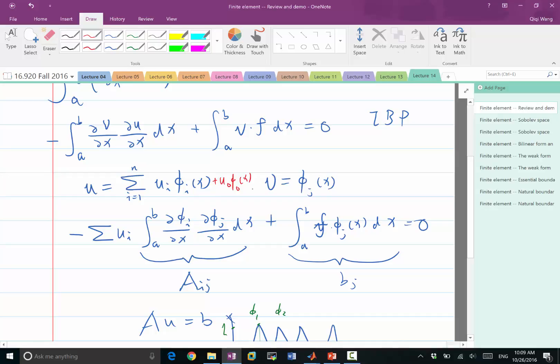So what happens is that because the test function, because the phi_j's, the v's, are still going to be 0 at the boundaries, the integration by parts still comes out to be the same with no boundary terms. But in addition, there is going to be a term that is minus integration of a and b,